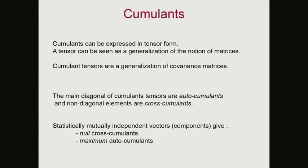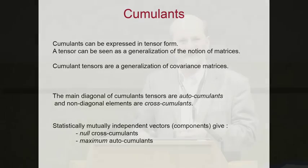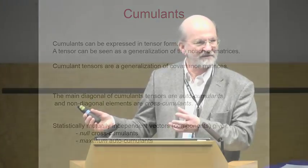You can construct a four-way tensor out of the cumulants — a tensor being a generalisation of matrices, cumulants being a generalisation of covariance matrices. So where PCA decomposes a variance-covariance matrix, here you have a cumulants tensor that you decompose in ICA.